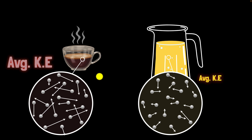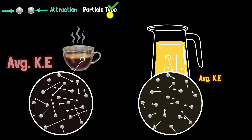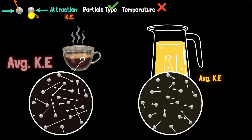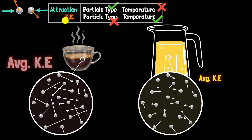So you can see there are two things here. First, we have the force of attraction that's trying to keep them together — this purely depends on the type of particle, but has nothing to do with temperature. On the other hand, we have kinetic energy that has nothing to do with particle type, but purely depends on temperature. These two are kind of opposite: the attractive force is trying to keep them together, whereas the kinetic energy is trying to make the molecules go farther away from each other.